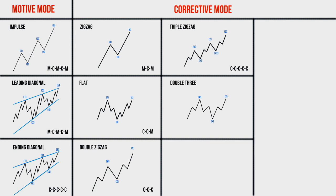The next pattern we will analyze is the double three. The double three consists of two threes — that is, two waves formed in the corrective mode — connected by a corrective intervening wave. The double three is denoted by the letters W, X, and Y. As a rule, the double three is a shallow correction, about 36% of the previous trend in depth. Very often the double three takes the form of a long corrective wave and has a slope against the dominant trend.